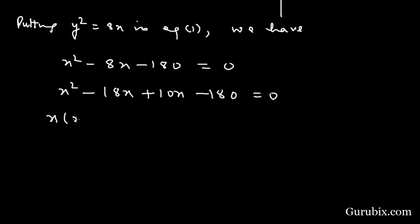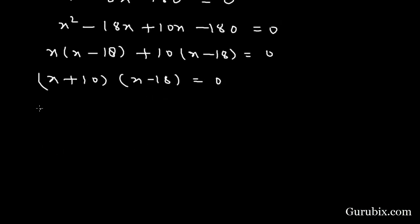We shall take common x from the first two terms. Then we have x minus 18 in the bracket. We shall take 10 common from the last two terms. Then we have x minus 18 in the bracket. So the factors are x plus 10 and x minus 18. Now we shall put x + 10 = 0 or x - 18 = 0. This means x = -10 or x = 18.